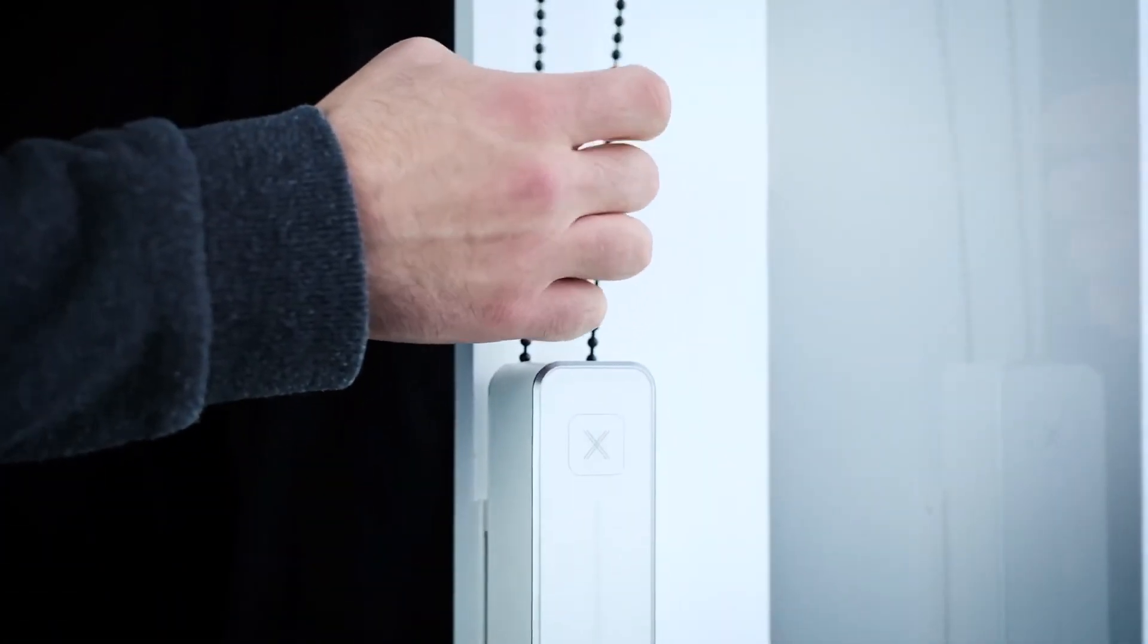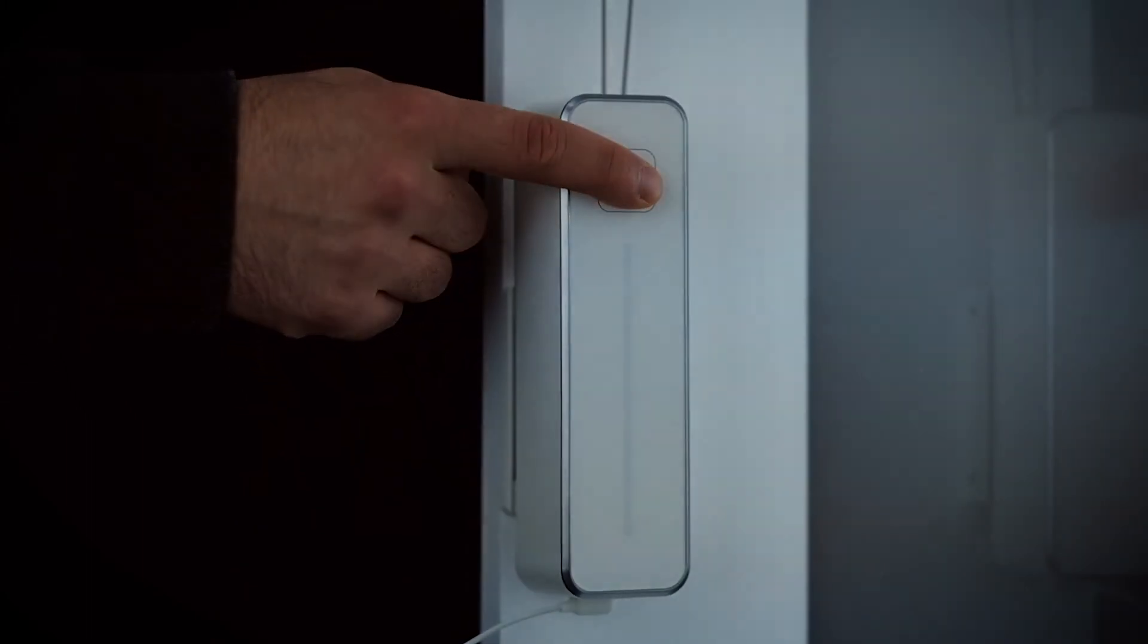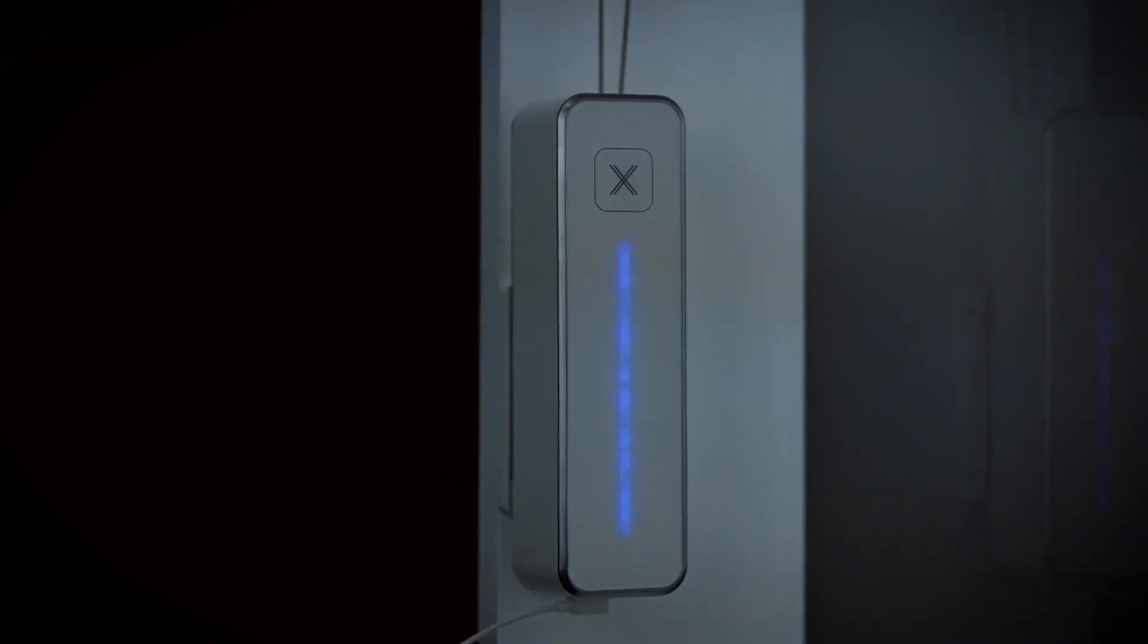Make sure the chain is tight. If it is not, push the gear down further on the bracket. Connect the power module to gear. Press and hold the X until the LEDs flash on. Your gear is now ready to be configured.